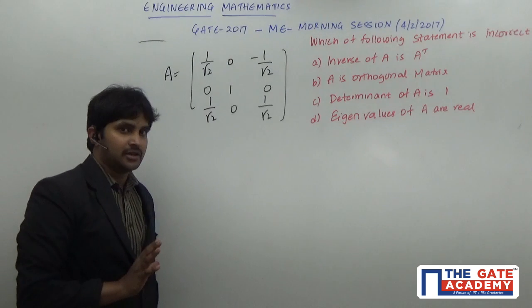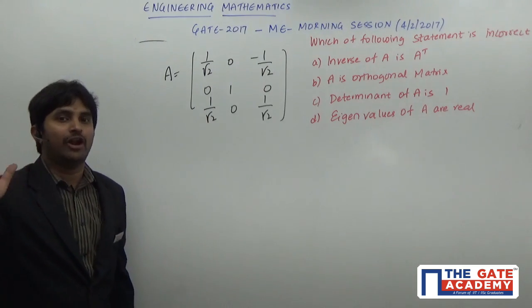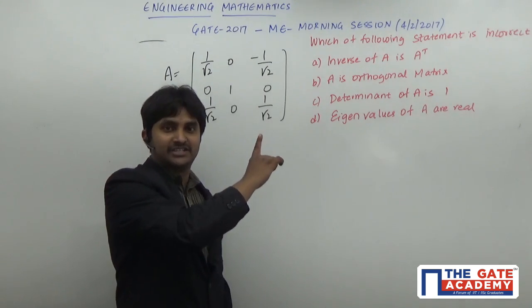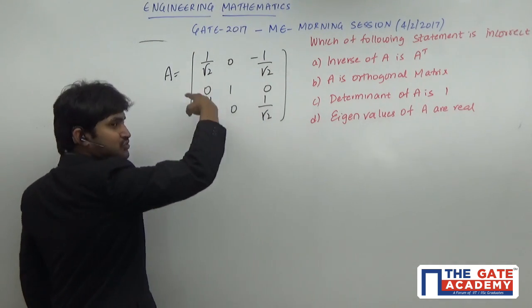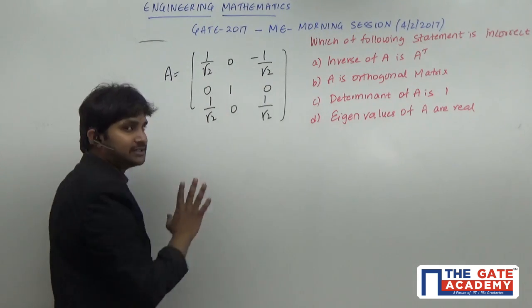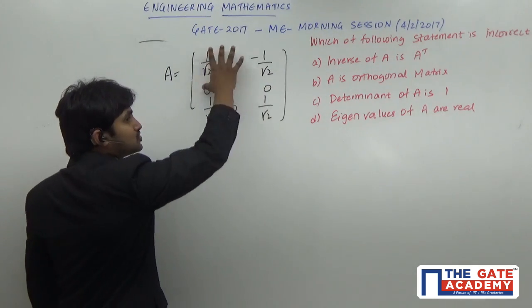If you observe here, this matrix can directly be called an orthogonal matrix. Why? Because the dot product of any two rows, if you consider a particular row as a vector, equals zero.